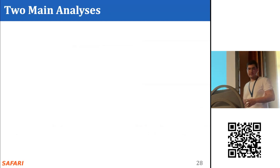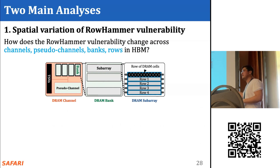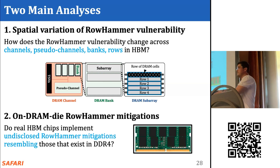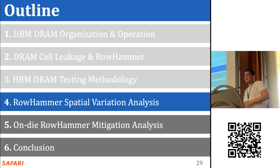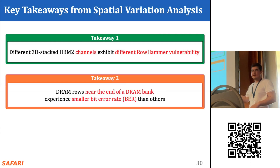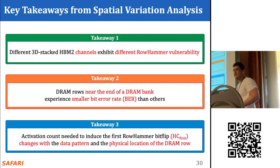We provide two main analyses in our study. First, we investigate how RowHammer vulnerability changes across different HBM components in terms of bit error rate and number of activations to the first bit flip. Second, we investigate if the HBM chip implements an undisclosed RowHammer mitigation resembling those known to exist in DDR4 chips. Starting with spatial variation analysis, three key takeaways are: different 3D-stacked HBM2 channels exhibit different RowHammer vulnerability; DRAM rows near the end of a DRAM bank exhibit significantly smaller bit error rate; and the activation count needed to induce the first bit flip substantially changes with data pattern and physical location.